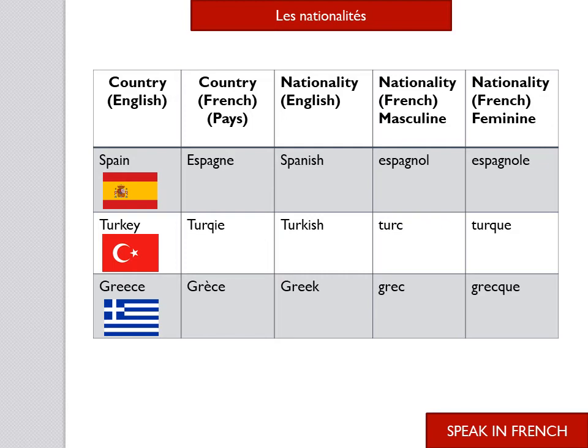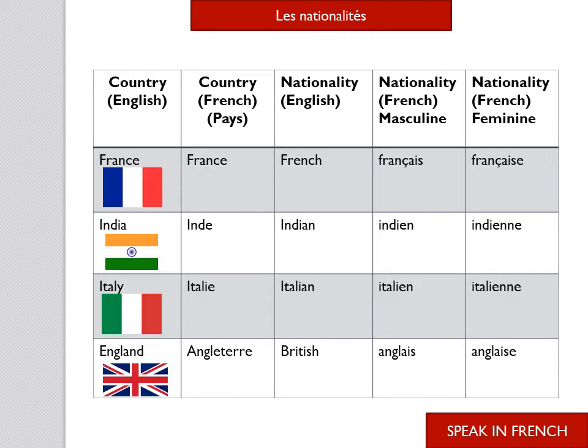Next is Greece — in French, we say Grèce. To convert to feminine, we add 'que': grec / grecque. Next is France — in French, we say France. The nationality in English is French. In French, we say français for masculine, and we add 'e' for the feminine: français / française.